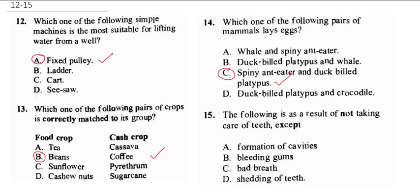Question 15 asks about consequences of not taking care of teeth. When you don't take care of your teeth, you can have cavities, bleeding gums, and bad breath. However, shedding of teeth is what naturally happens to six-to-seven-year-olds, where their baby teeth fall off to allow permanent teeth to grow in. So the correct answer is D — shedding of teeth is not a result of poor dental care; it happens to every individual.